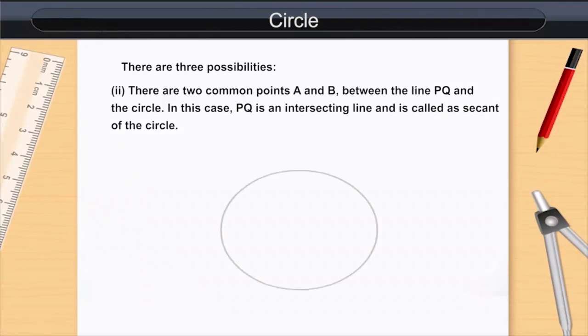Two: There are two common points, A and B, between the line PQ and the circle. In this case, PQ is an intersecting line and is called a secant of the circle.